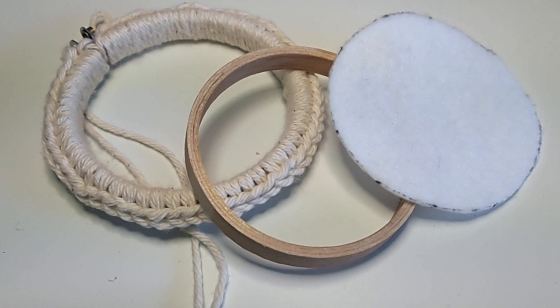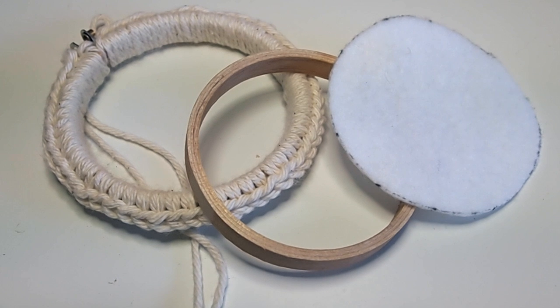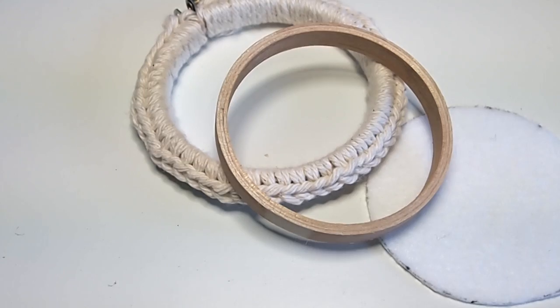Hi, this is Bonnie. To start this project, we first want to cut a circle the size of our outer embroidery hoop out of felt. You'll want to do this before you cover it with your crochet.